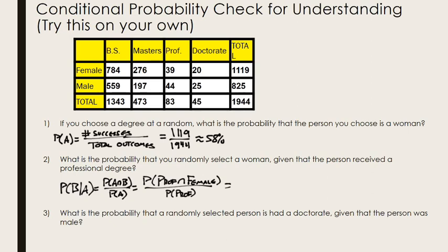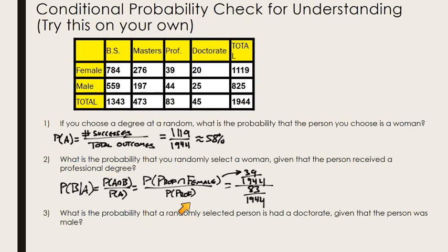Looking at our table: the probability of someone being female with a professional degree is 39 out of 1944 total people. The probability of someone having a professional degree is 83 out of 1944. When we flip the second fraction and multiply, the 1944s cancel and we get 39 out of 83 — there are 39 females out of 83 total with professional degrees. That's roughly 47 percent.